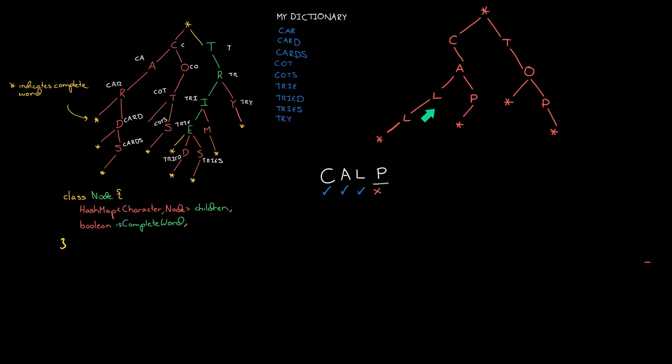Now the way that I've explained tries so far, you would do each of these lookups from scratch. You'd say is C a valid prefix, yes there is. And then you'd do is CA a valid prefix and you start from scratch over at the root.